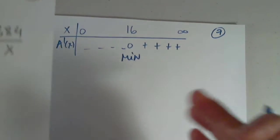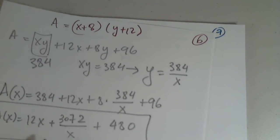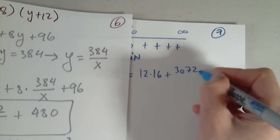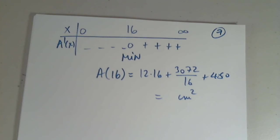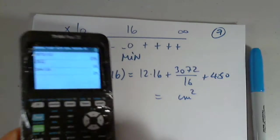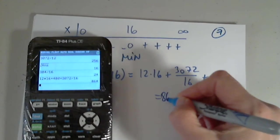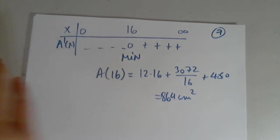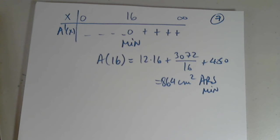I need to show that. Now if we're asked to find the minimum, then I have to find a of 16. Which is this. 12 times 16 plus 3072 over 16 plus 480. And this will be in centimeters squared. I got 864. In case we're asked to find. And this is guaranteed to be the absolute min. This area. This area. With the given restrictions. That the middle part. The printed area. Is 384 square centimeters.